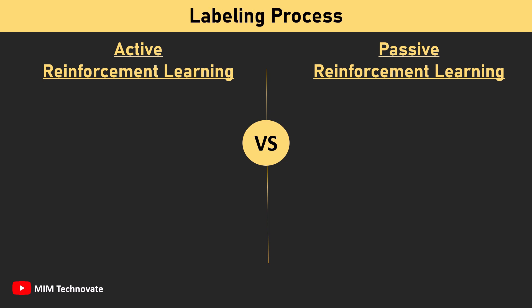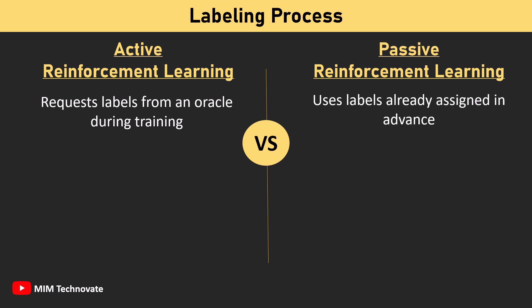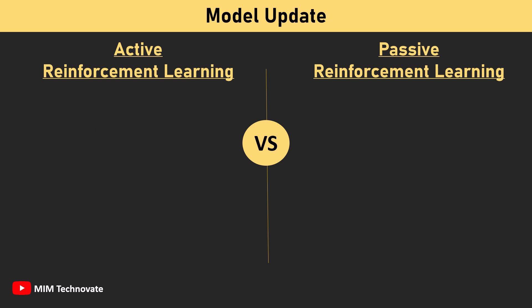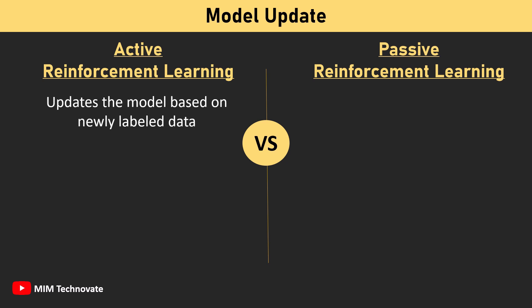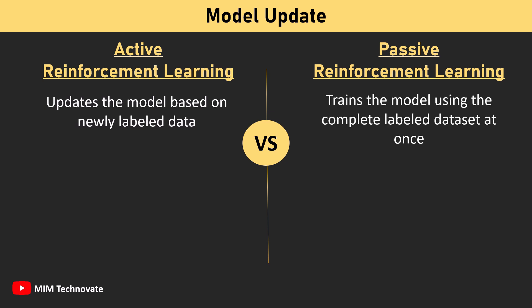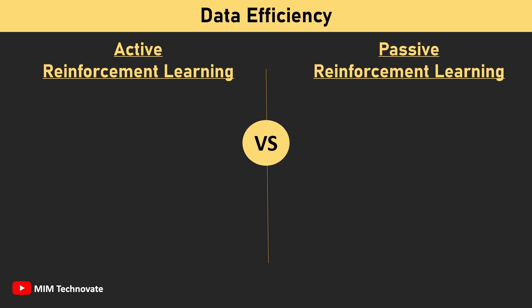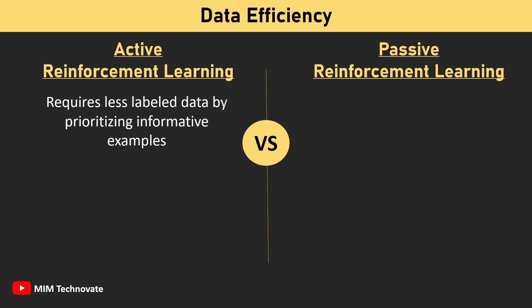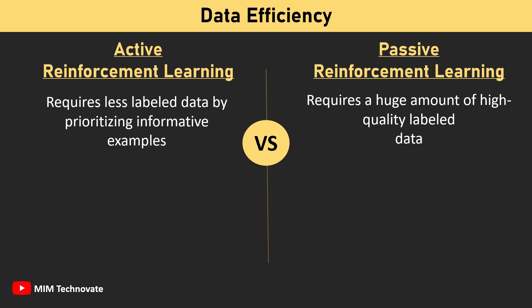Regarding the labeling process, Active Reinforcement Learning requests labels from an oracle during training, while Passive Reinforcement Learning uses labels already assigned in advance. For model updates, Active Reinforcement Learning updates the model based on newly labeled data, whereas Passive Reinforcement Learning trains the model using the complete labeled dataset at once. In terms of data efficiency, Active Reinforcement Learning requires less labeled data by prioritizing informative examples, while Passive Reinforcement Learning requires a large amount of high-quality labeled data.